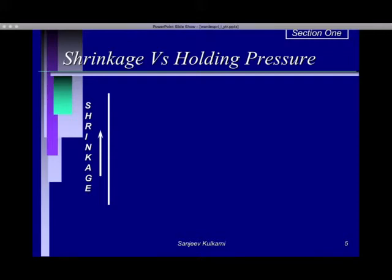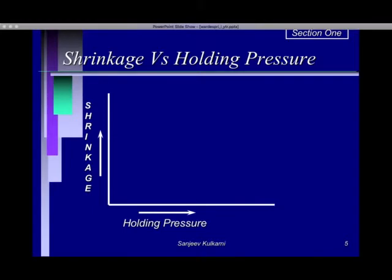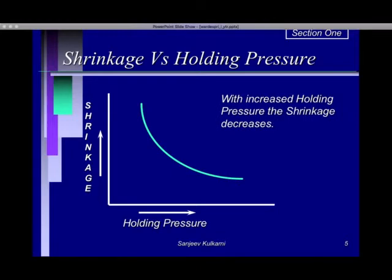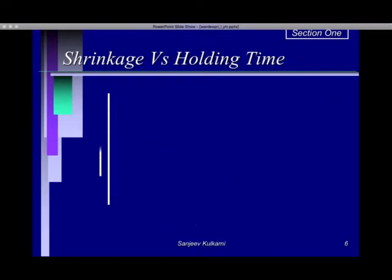We are going to define the relationship of each variable with shrinkage on the y-axis and the variable on the x-axis. The relationship of shrinkage versus holding pressure is nonlinear. At lower holding pressure the shrinkage is high; as you go on increasing the holding pressure the shrinkage decreases. This is how the graph looks.